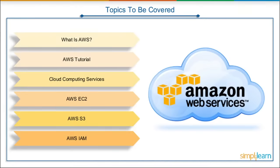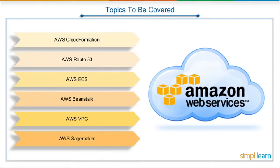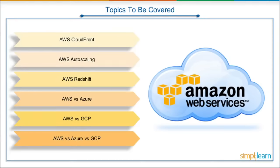Then we will explore some of the very important services provided by AWS in various categories like compute, storage, database and networking. Following that, we will explore and understand the complete mechanism and architecture of some of its very important features related to containers, storage and security — that are AWS EC2, AWS S3, AWS IAM, AWS CloudFormation, AWS Route 53, AWS ECS, AWS Beanstalk, AWS VPC, AWS SageMaker, AWS CloudFront, AWS Autoscaling and AWS Redshift.